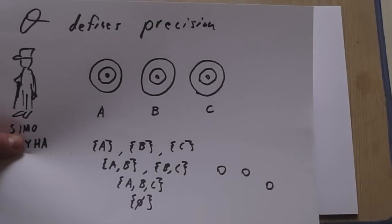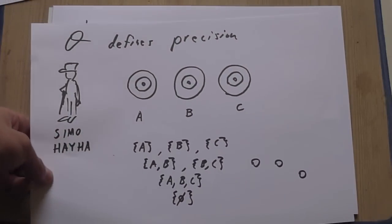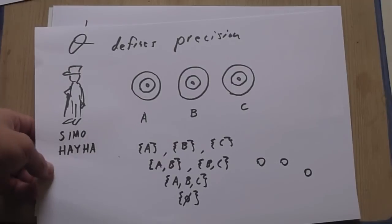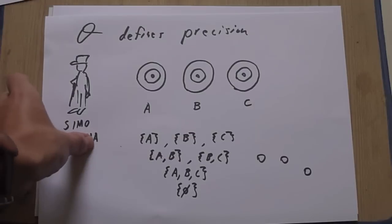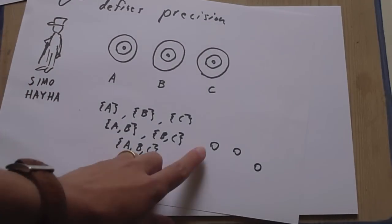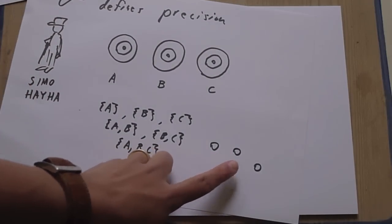And then we described a number of topological spaces. We described a set of topological spaces on three objects. The first one we described is this one, which we associated with Simo Häyhä, the greatest sniper of all time. And the topological space, if you drew it at its simplest level, just looks like this. It's three isolated points.